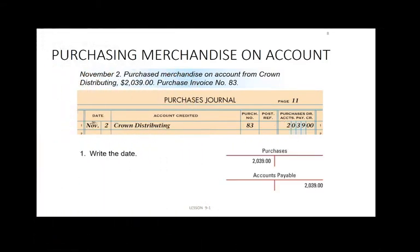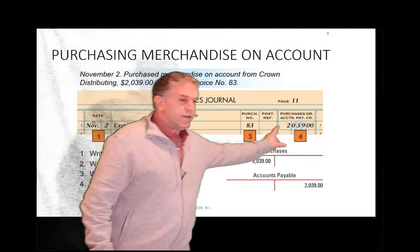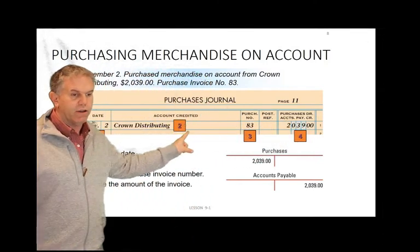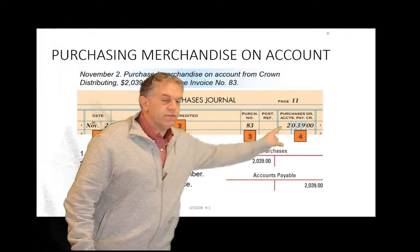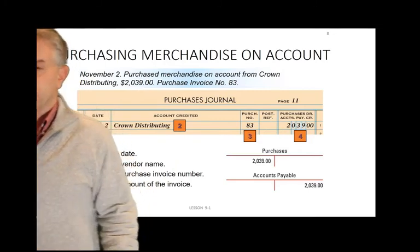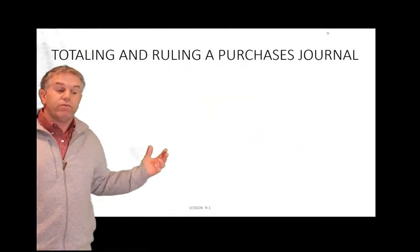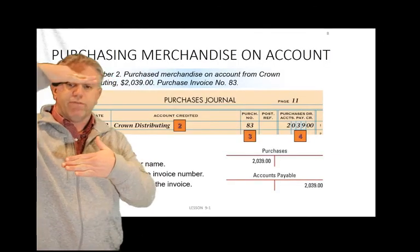We go through our transactions — there are your T-accounts. The accounts payable credit is what's represented in the accounts credited column. Crown Distributing is going to that accounts payable credit. At the end, once we've posted all the transactions, chapter 9 has about five or six of them for you to do.